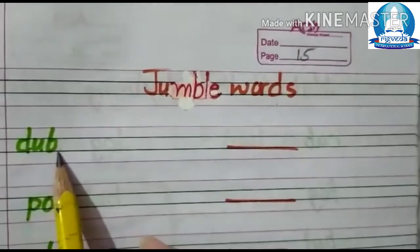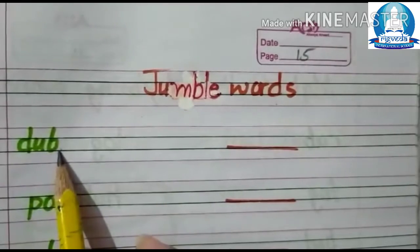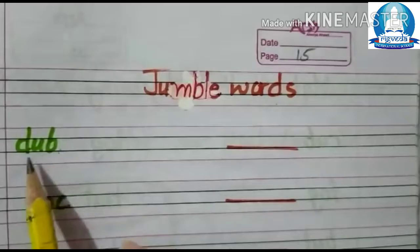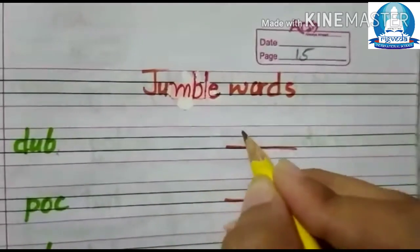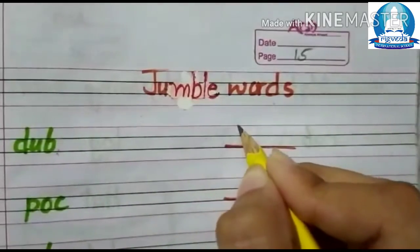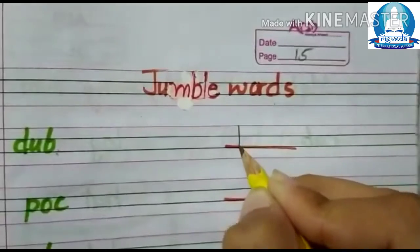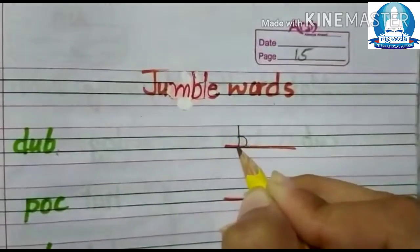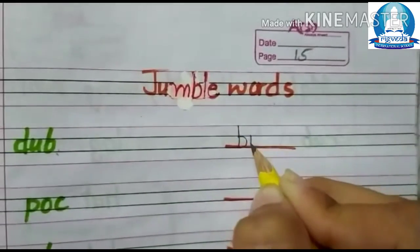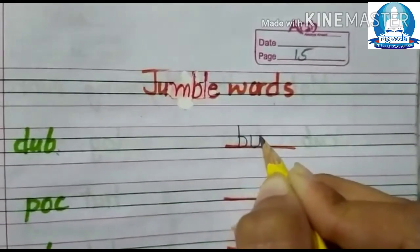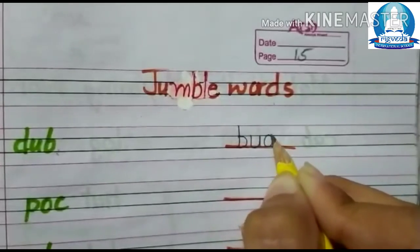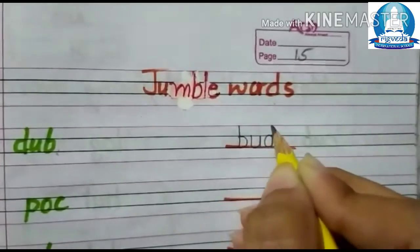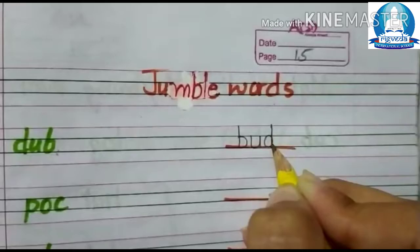D, A, B. What we will make from D, A, B? B, A, D.